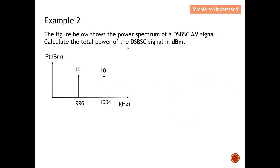Example 2: This figure shows the power spectrum of a double sideband suppressed carrier amplitude modulation signal. Calculate the total power of the DSB-SC signal in dBm. The spectrum shows frequency versus power, so I know the lower sideband is 10 dBm and the upper sideband is 10 dBm. To find total power, I need to add these two powers together in ratio — so first I convert from dBm to ratio, add them, then convert back to dBm.